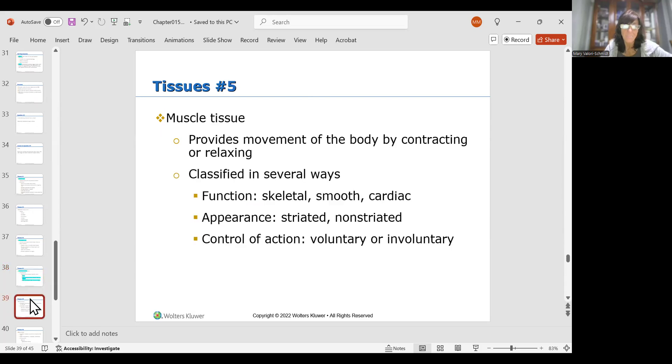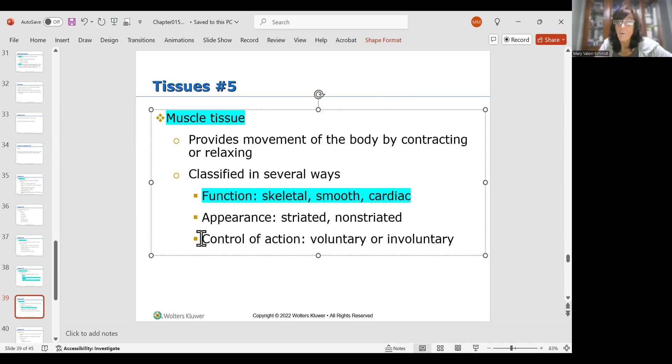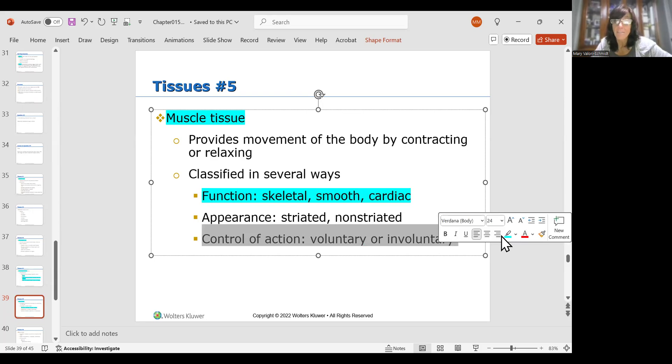Then you have muscle tissue. Muscle tissue is classified in different ways too, and it's classified by either its function, its appearance, or whether it's voluntary or involuntary. So you really need to know function and you really need to know voluntary or involuntary. Those things are important. So function: we have muscle tissue that's either skeletal muscle tissue, smooth muscle tissue, and then there's cardiac muscle tissue only found on the heart. And then all of those are voluntary or involuntary.